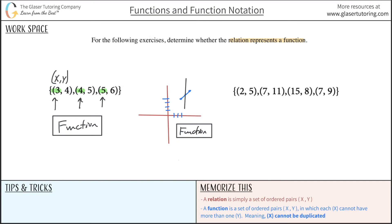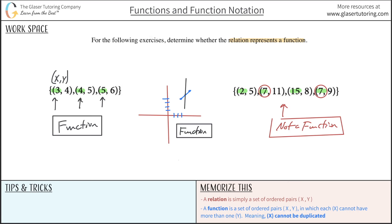Let's do the next example the easier way — just highlight the x values. Here's x, here's x, here's x, here's x. Are any of them the same? Yes — there is one that is the same: it's the seven. Once x repeats, we can conclude it is not a function. It's still a relation, because a relation at the bare minimum is just a certain number of ordered pairs. We have four ordered pairs — it's a relation, but this relation is not a function because the x repeats.